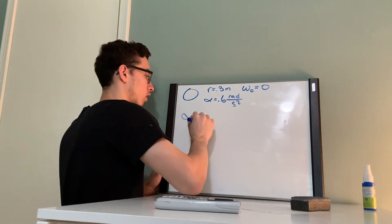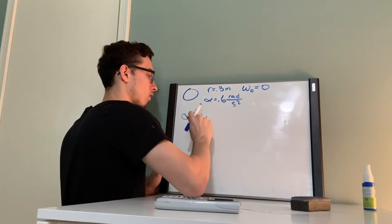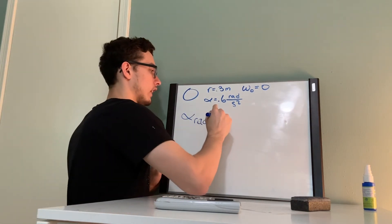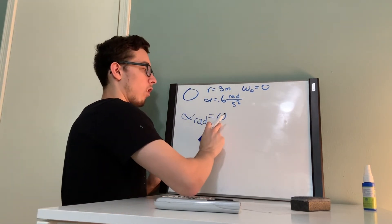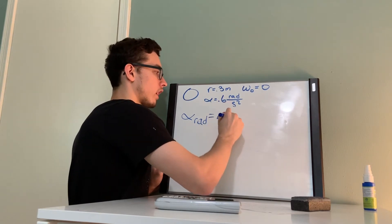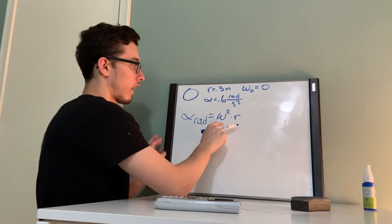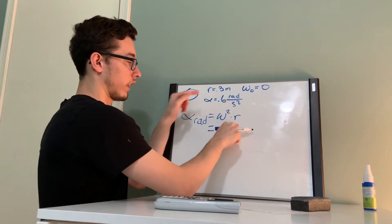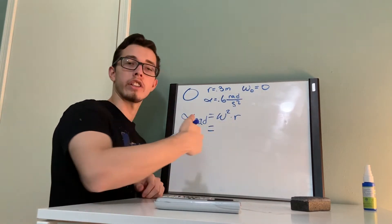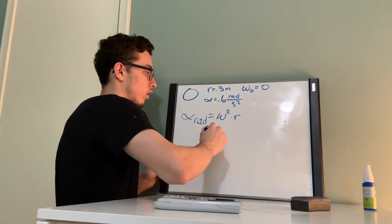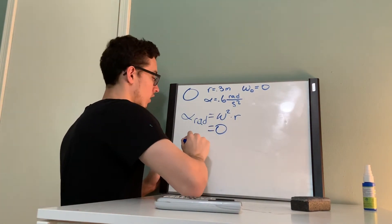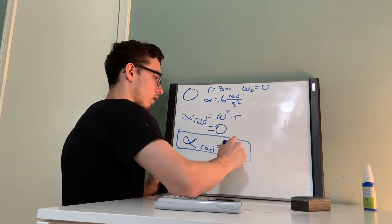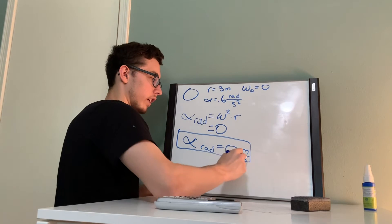Next, we're going to do our radial acceleration. This formula is our angular velocity squared times our radius. We have 0 squared times the radius. Zero squared times anything is zero, so this is just 0 meters per second squared.